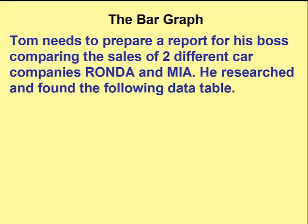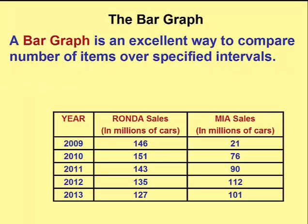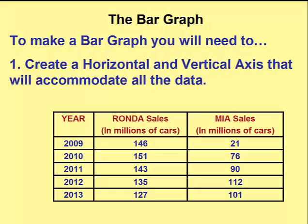In our third example, we'll pretend you're a business person who needs to prepare a report for your boss. You need to compare two different car companies, Rhonda and Mia. You did some research and found the following data — notice how car sales are represented in terms of millions of cars. A bar graph is an excellent way to compare number of items over a specified period of time. To do a bar graph, we create a horizontal and vertical axis that accommodates all of our data.